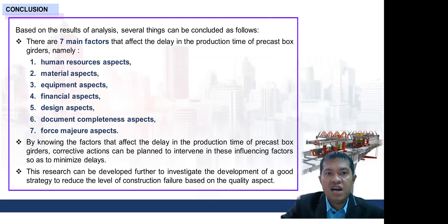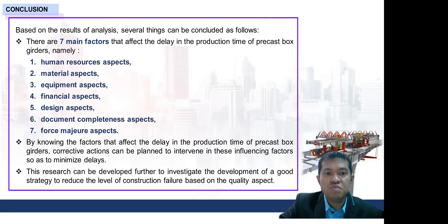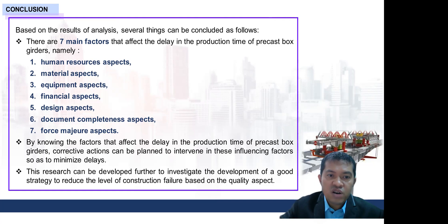In conclusion, based on the analysis, there are seven main factors that affect the delay in the production time of the precast box girder: (1) human resource, (2) material, (3) equipment, (4) financial, (5) design, (6) document completeness, and (7) format or first major aspect. By knowing these factors, corrective actions can be planned to address each contributing factor.